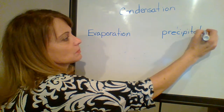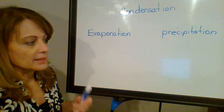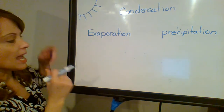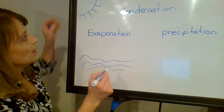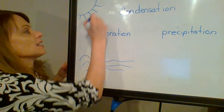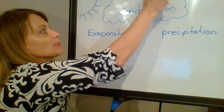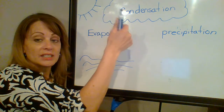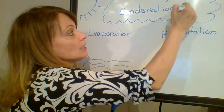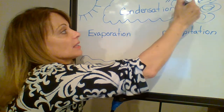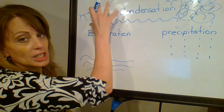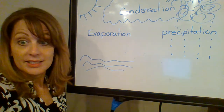I do not have a yellow marker. If I had a yellow marker, I would put the sun up here. The sun beats down on the water and the water turns into water vapor. As it goes up into the air, we call that evaporation. Condensation happens when the water droplets hit the cool air and they condense. They come together and form water droplets again. As the clouds get more and more full of water droplets, it falls to the ground and we have precipitation. So we have evaporation, condensation, precipitation. Down comes the rain.